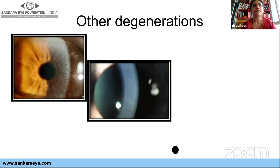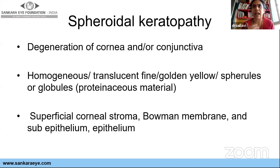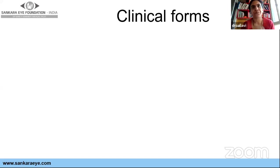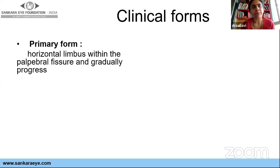This is nothing but the Hassel-Henley body. Spheroidal degeneration is also called climatic droplet keratopathy, or CDK. These are proteinaceous material released from the limbal vessels that deposit under the epithelium — in the superficial stroma and Bowman's — and slowly, if they worsen, reach the epithelial level. The primary form has no other pathology, just horizontal limbal involvement, usually in the interpalpebral area, occurring more in UV-exposed people, and is progressive.